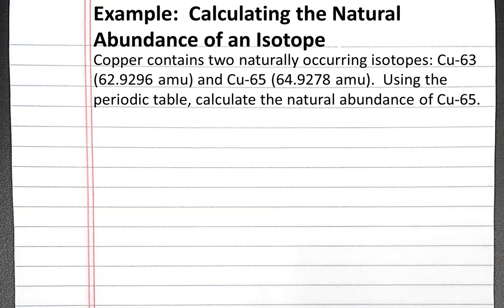In this example, we'll calculate the natural abundance of an isotope. Our problem states copper contains two naturally occurring isotopes: copper-63 with a mass of 62.9296 AMU and copper-65 with a mass of 64.9278 AMU. Using the periodic table, calculate the natural abundance of copper-65.